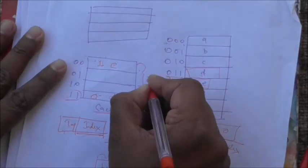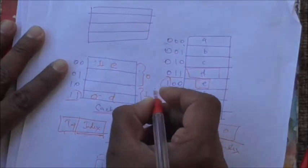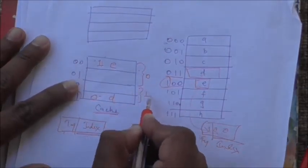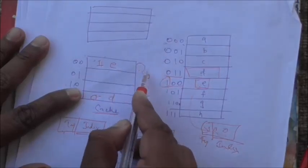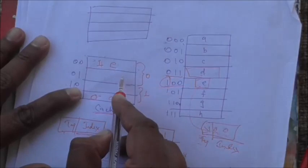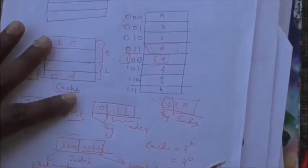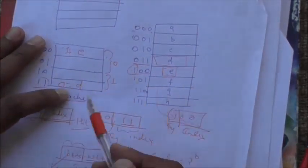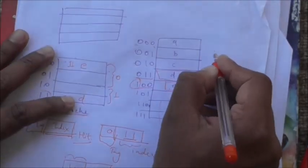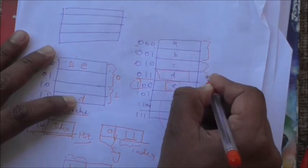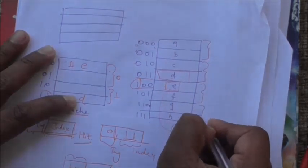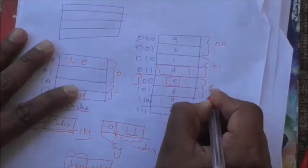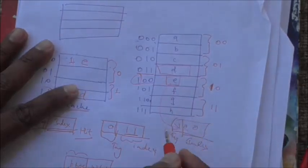For example, consider cache divided into two blocks — block number 0 and block number 1 — each having two words: word 0 and word 1. Main memory is also divided into blocks of two words each, giving four blocks total.